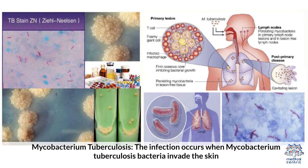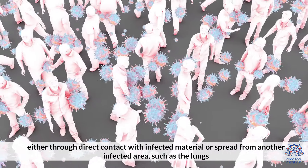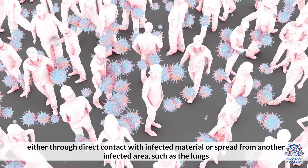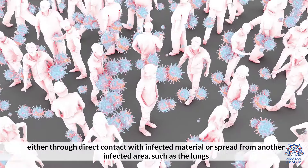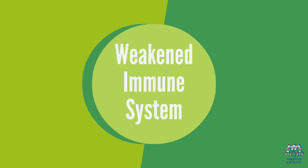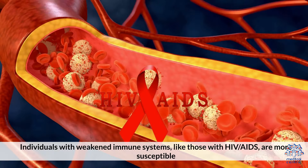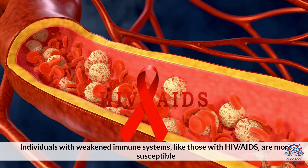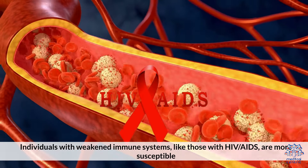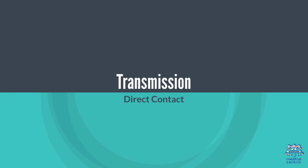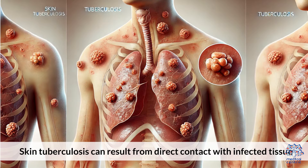Causes of Skin Tuberculosis. Bacterial infection: Mycobacterium tuberculosis. The infection occurs when Mycobacterium tuberculosis bacteria invade the skin, either through direct contact with infected material or spread from another infected area, such as the lungs. Individuals with weakened immune systems, like those with HIV/AIDS, are more susceptible.